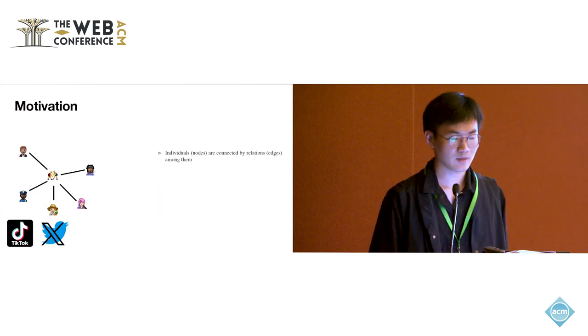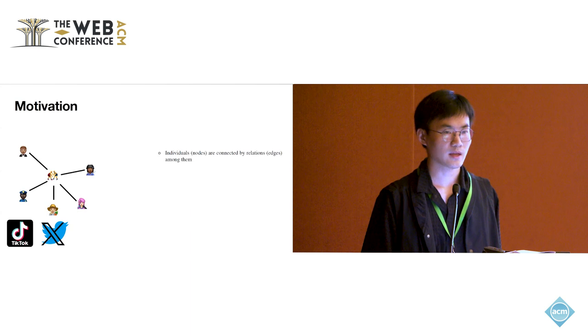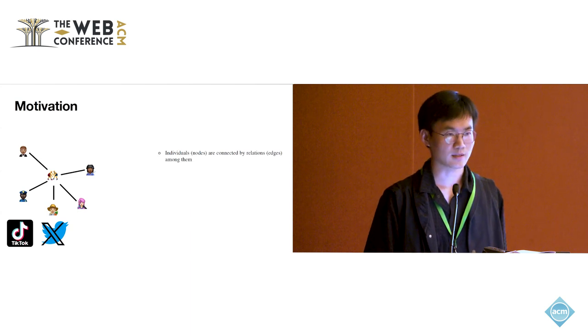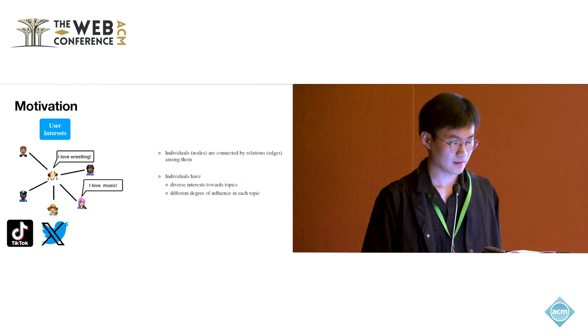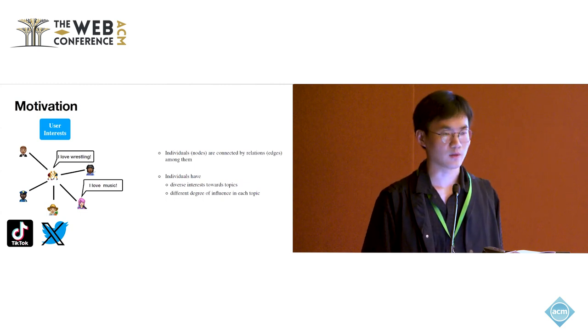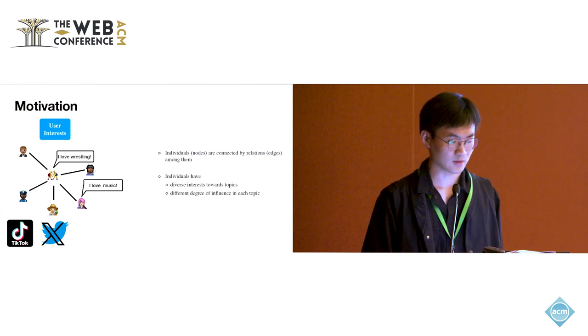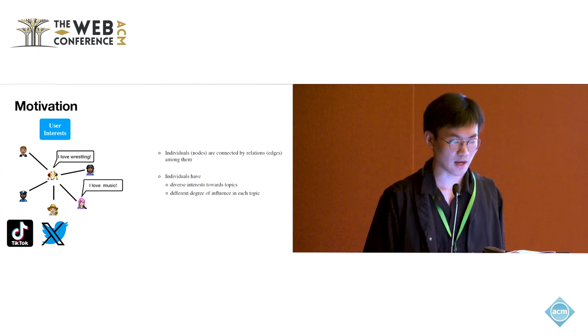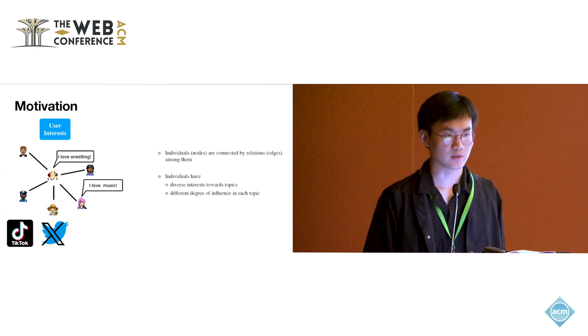At the beginning, I would like to share some motivation behind this work. In social networks, individuals are usually connected by relations among them. For example, like on Twitter, the relation could be following relationships. And it was also observed that in social networks, individuals have diverse interests among topics, and also individuals have different influence among those topics.